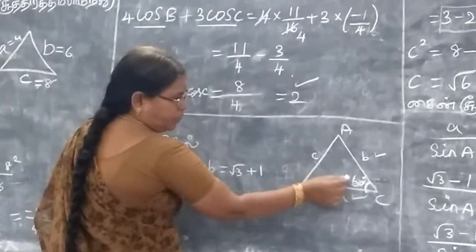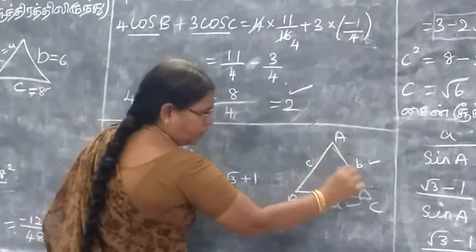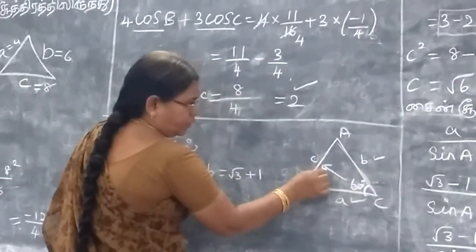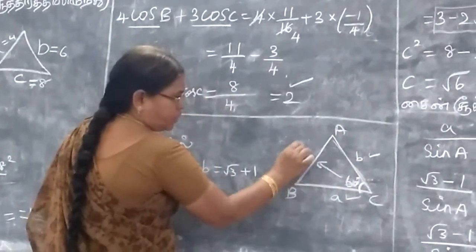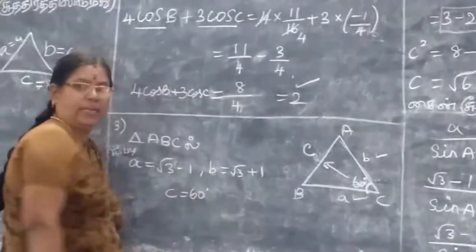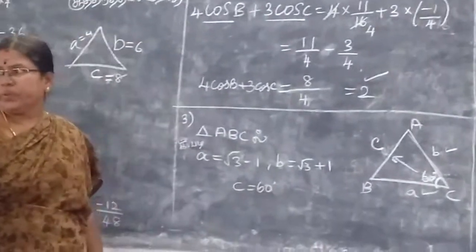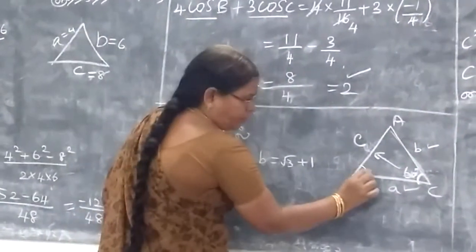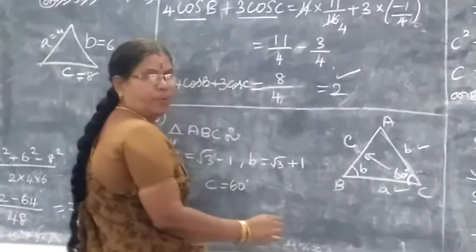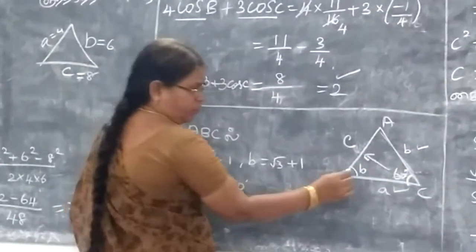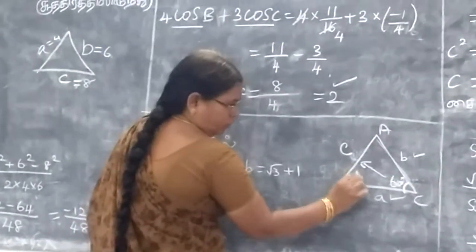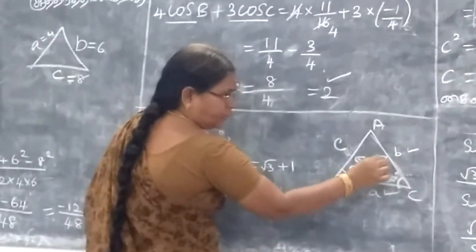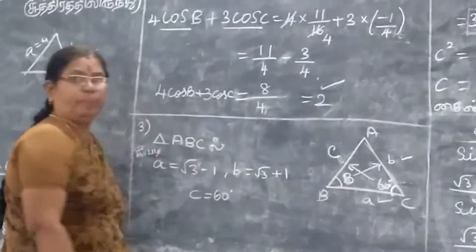This is opposite. This angle is opposite. This is the side C. Suppose this angle is B. Angle B. This is opposite side B.